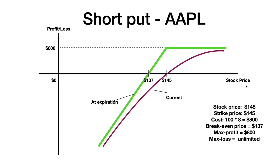For short positions we have a defined profit but unlimited loss theoretically. These are the two payoff diagrams — one is at expiration and the other is the current payoff diagram with time value. The difference is the time value. The current one has a more gentle gradient because it has intrinsic and extrinsic value, while the at-expiration graph only has intrinsic value.